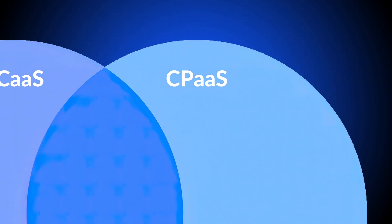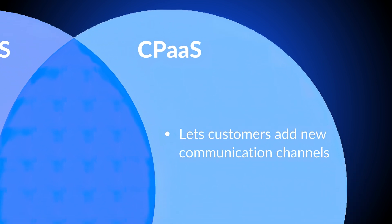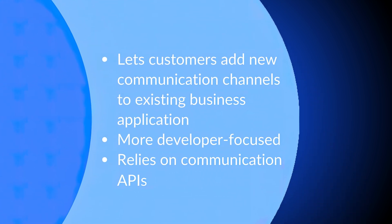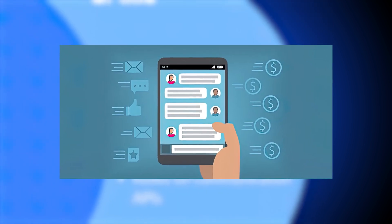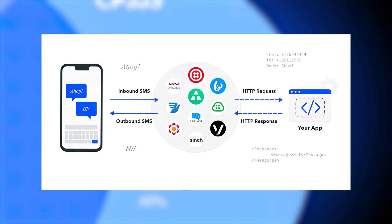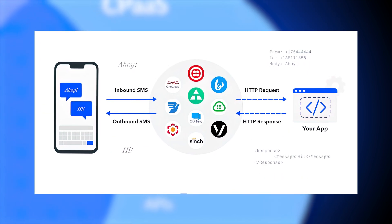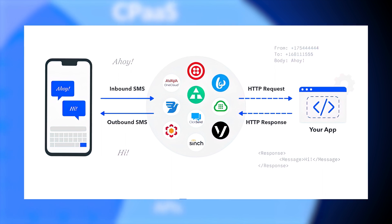The difference between CPaaS and CCaaS is that CPaaS is an API programming code that plugs into your apps to add new communication functionality, while CCaaS is a fully developed software application ready-made with communication features. A CPaaS platform offers the APIs, SDKs, and documentation for your developers to add an isolated capability, like outbound voice calling, into your app's software code, unlocking new use cases. This API builds upon a business application that you already own and have developed.